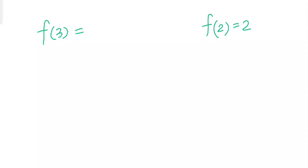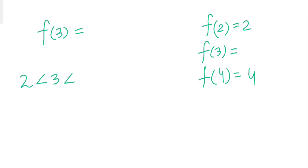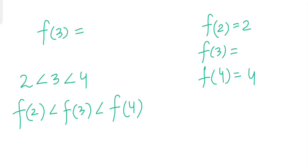We know f(2)=2 and f(4)=4, but we don't know f(3). Using the third property, since 2 < 3 < 4, we have f(2) < f(3) < f(4), which means 2 < f(3) < 4. Since we are working over natural numbers, the only integer strictly between 2 and 4 is 3, so f(3) must equal 3.